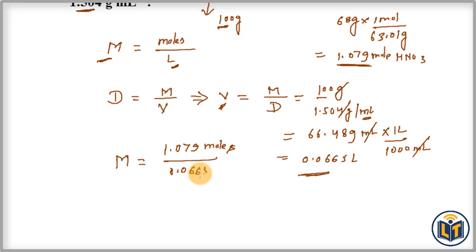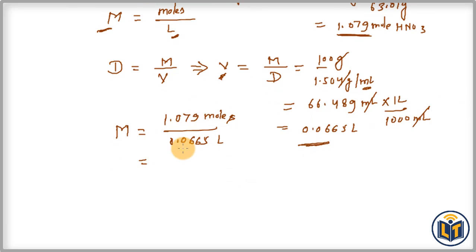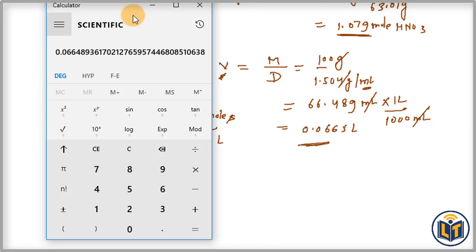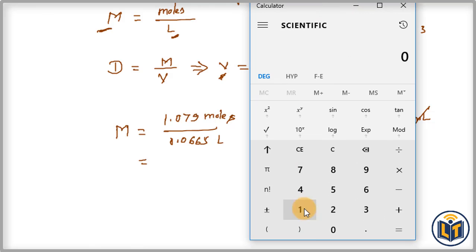Now we can divide these values. At the top, the value which we have is 1.079 divided by 0.0665. The value which we get is 16.22, which we can write as 16.23 moles per liter. This is the molarity of the solution.